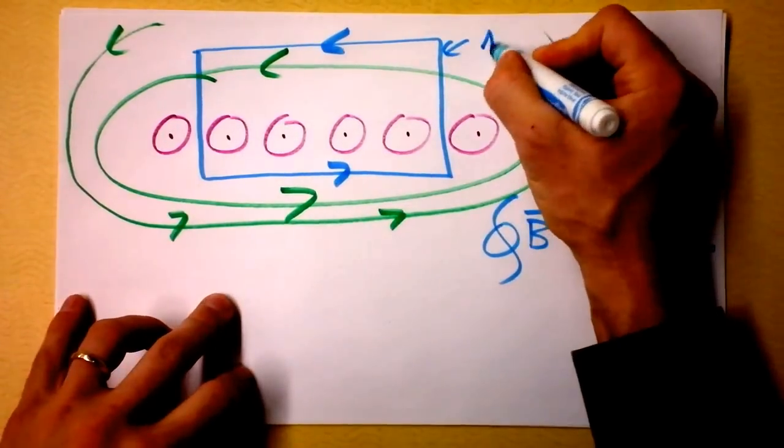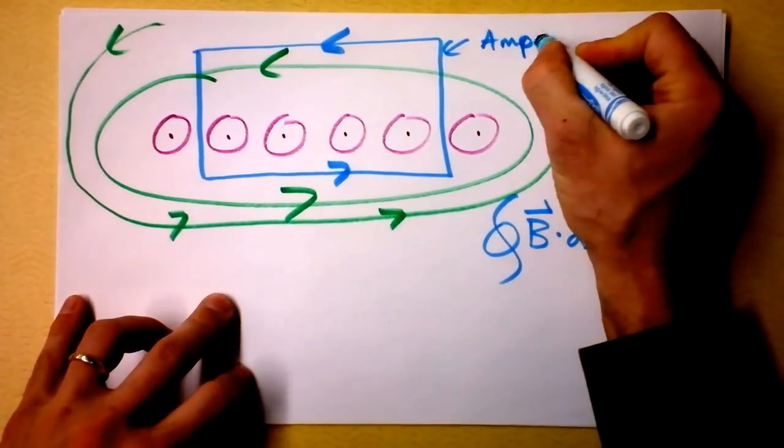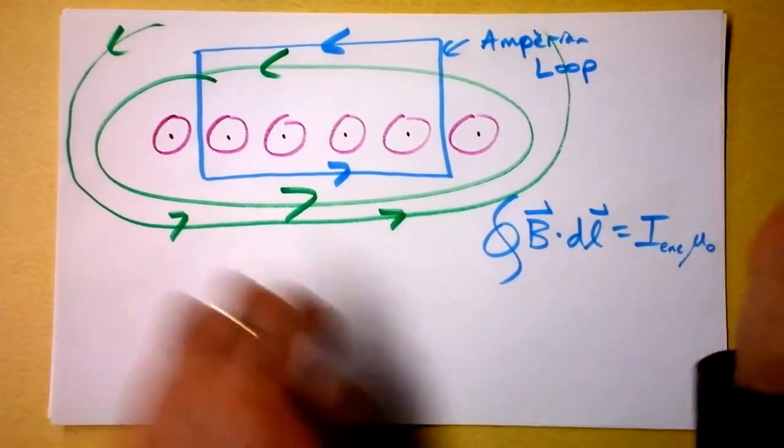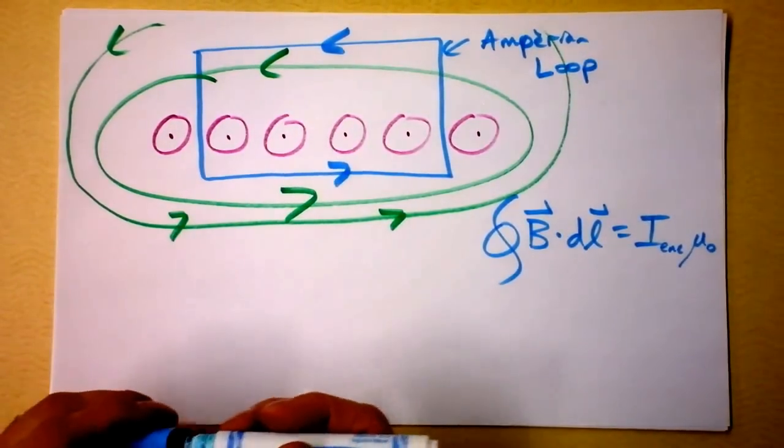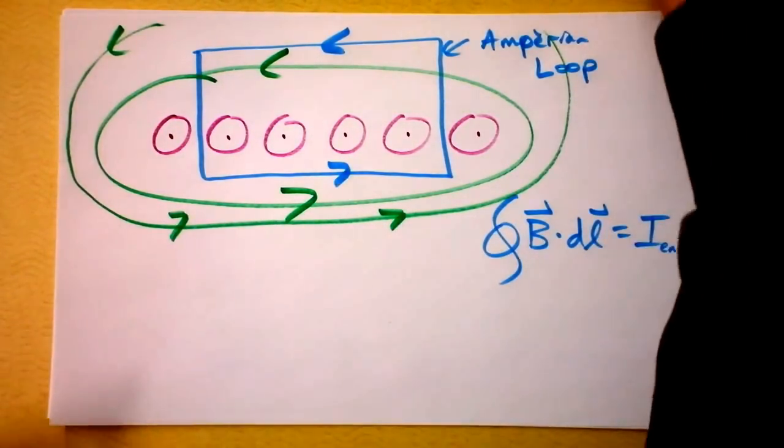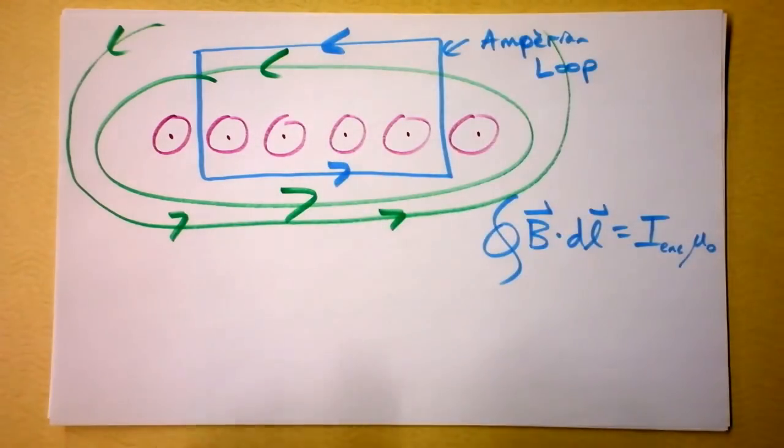This is my amperian loop, and I plan to divide this loop into four sections. So we're going to think about this because of the symmetry. Look at the symmetry of that. Isn't that beautiful?